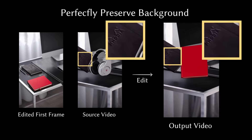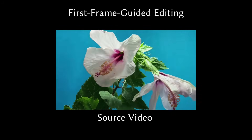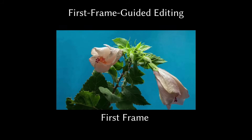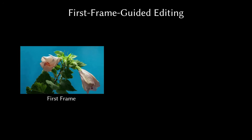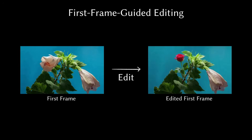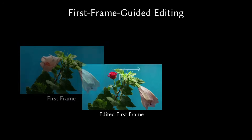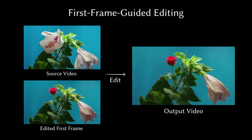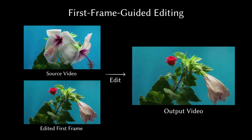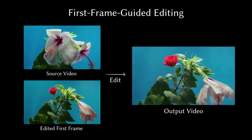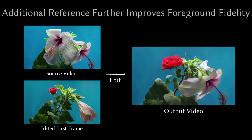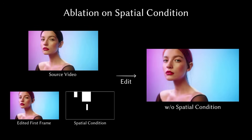This is where it gets crazy. A time-lapse of a hibiscus blooming — they edit the bud to a rose and give it a reference of a bloomed rose. The AI doesn't just change it; it makes it bloom as a rose. This is next level.